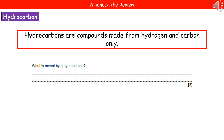Welcome to our review on alkanes. The first thing we need to know is the very important definition of a hydrocarbon. Hydrocarbons are compounds made from hydrogen and carbon only. This used to be asked as a two-mark exam question: your first mark is for saying it's a compound made from hydrogen and carbon, and the second mark is for the word 'only'. So make sure you learn that definition.